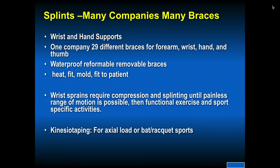I've talked a lot about physical exam and x-rays. I did want to mention treatment of hand and wrist problems. There are many companies that make braces and splints for the hand and wrist — one company has 29 different braces for forearm, wrist, hand, and thumb. Know what braces you're fitting. Some are molded to the patient. Make sure you communicate well about whether you want the thumb included in a thumb spica or not. Make sure if it's a fracture with swelling that the splint fits well to prevent skin problems.